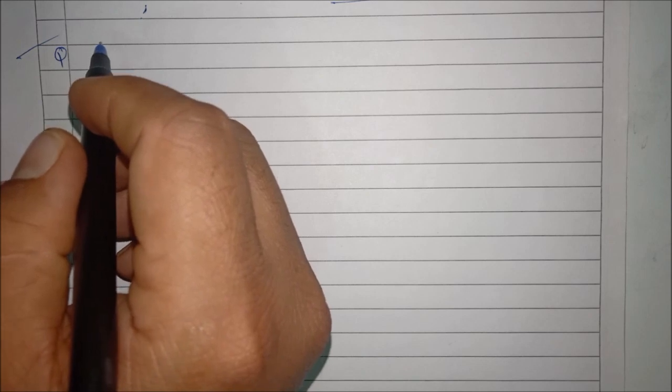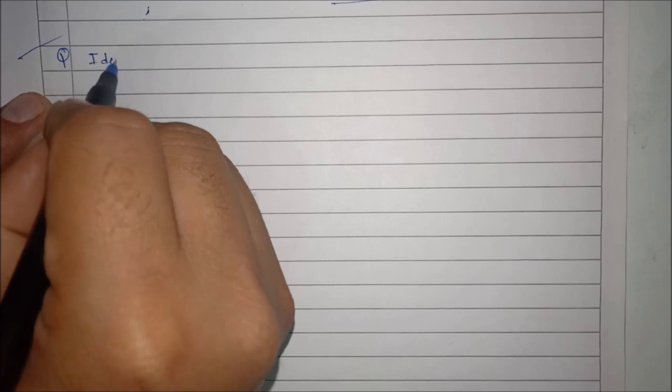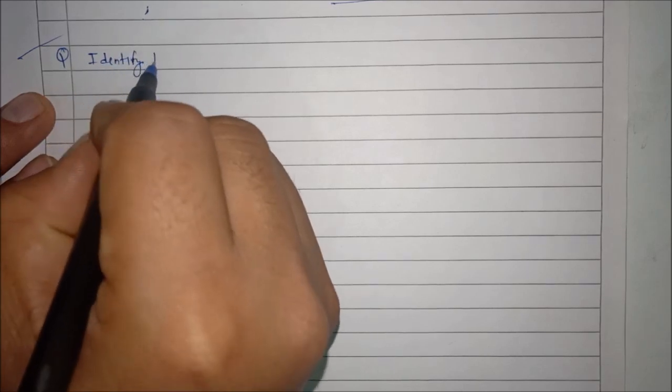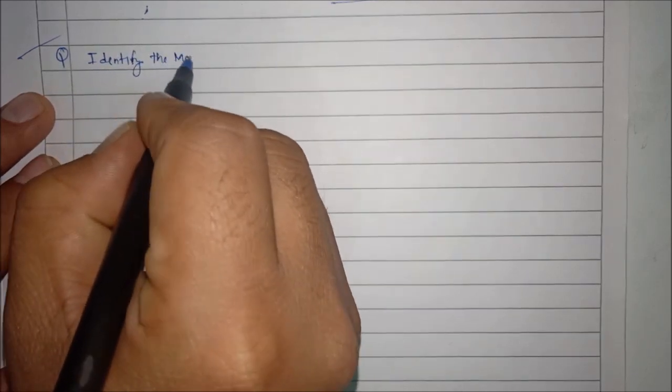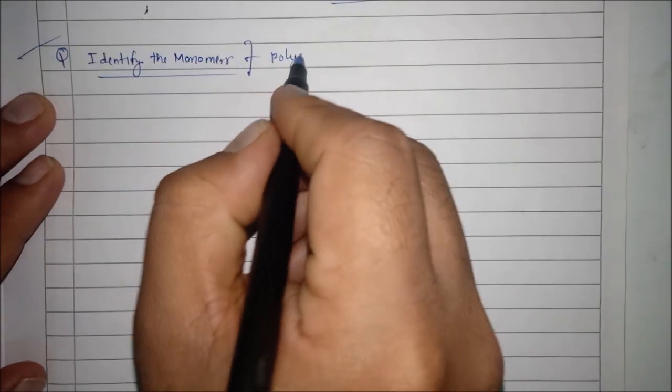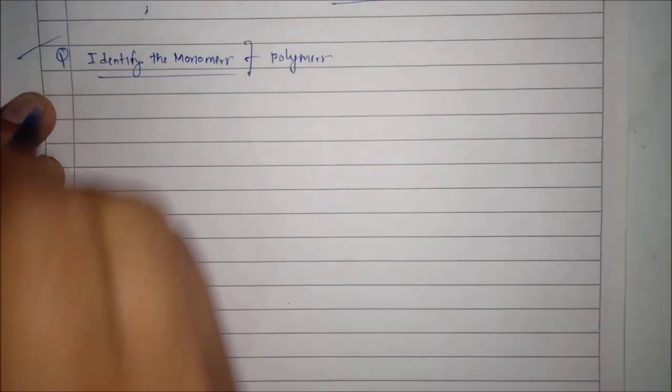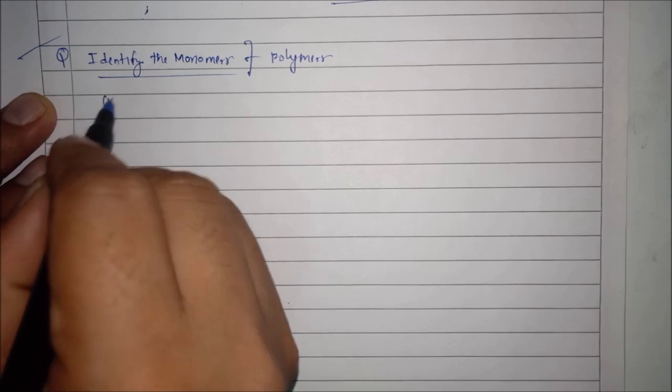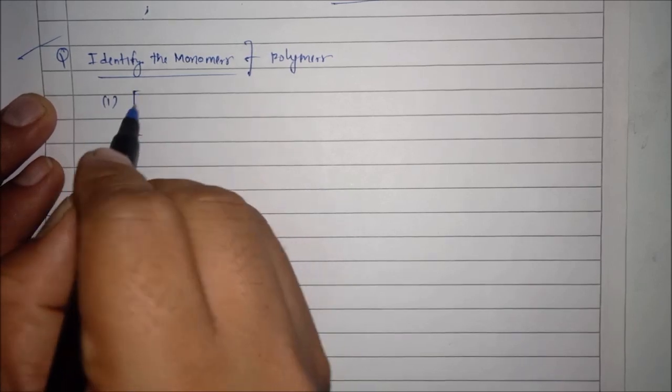Hello everyone, let's see another question that is there in your CBSE question paper of class 12th chemistry. The question is: identify the monomers for the following polymers. Here the arrangement is shown. Let us take the first arrangement.